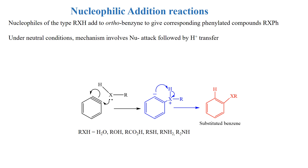Nucleophilic addition reactions: nucleophiles of the type R-X-H are added to ortho-benzyne to give the corresponding phenylated compounds. Under neutral conditions, the mechanism involves nucleophilic attack followed by proton transfer to give the substituted benzene. These nucleophiles can be water, alcohol, carboxylic acid, alkyl thiol, or primary and secondary amine.